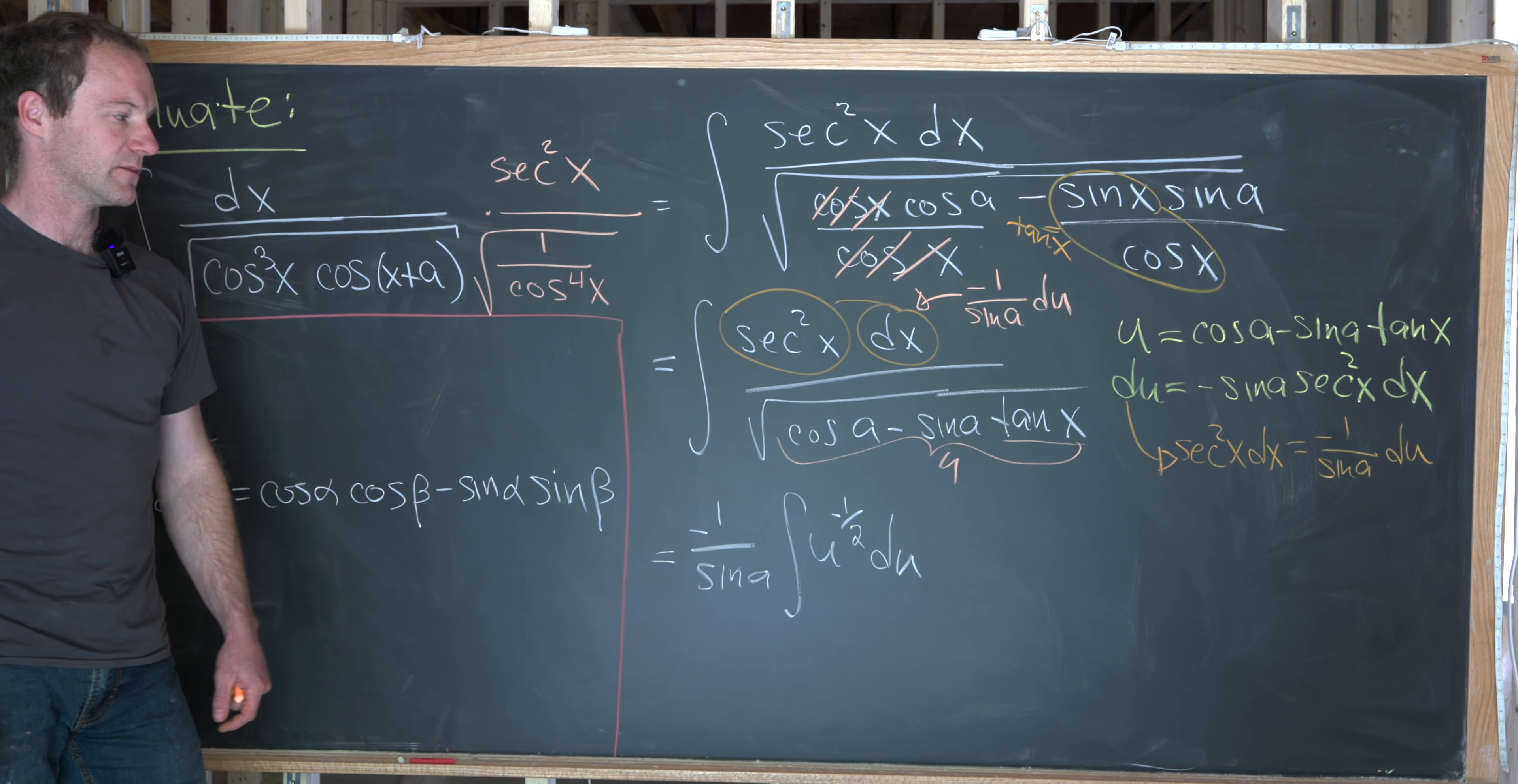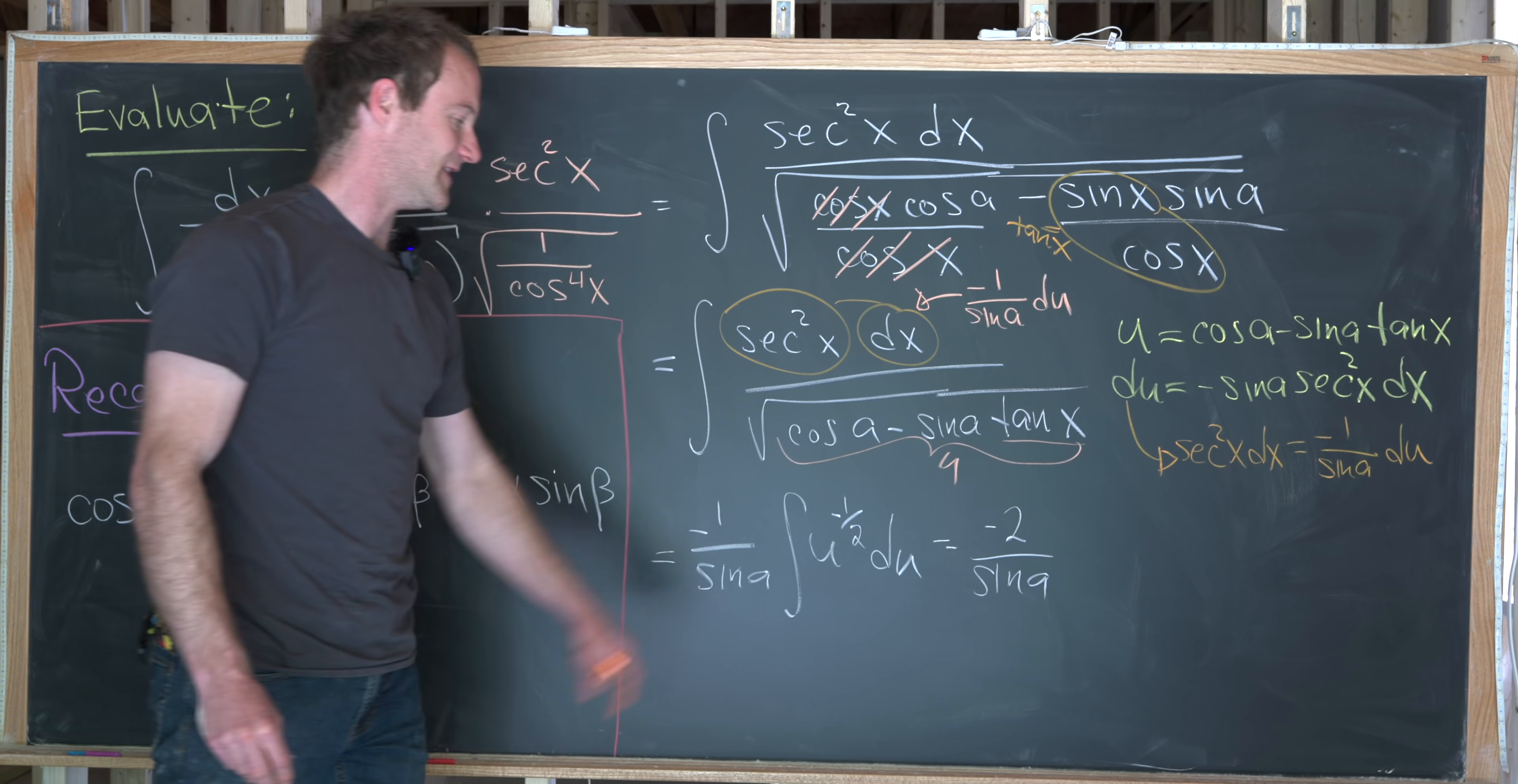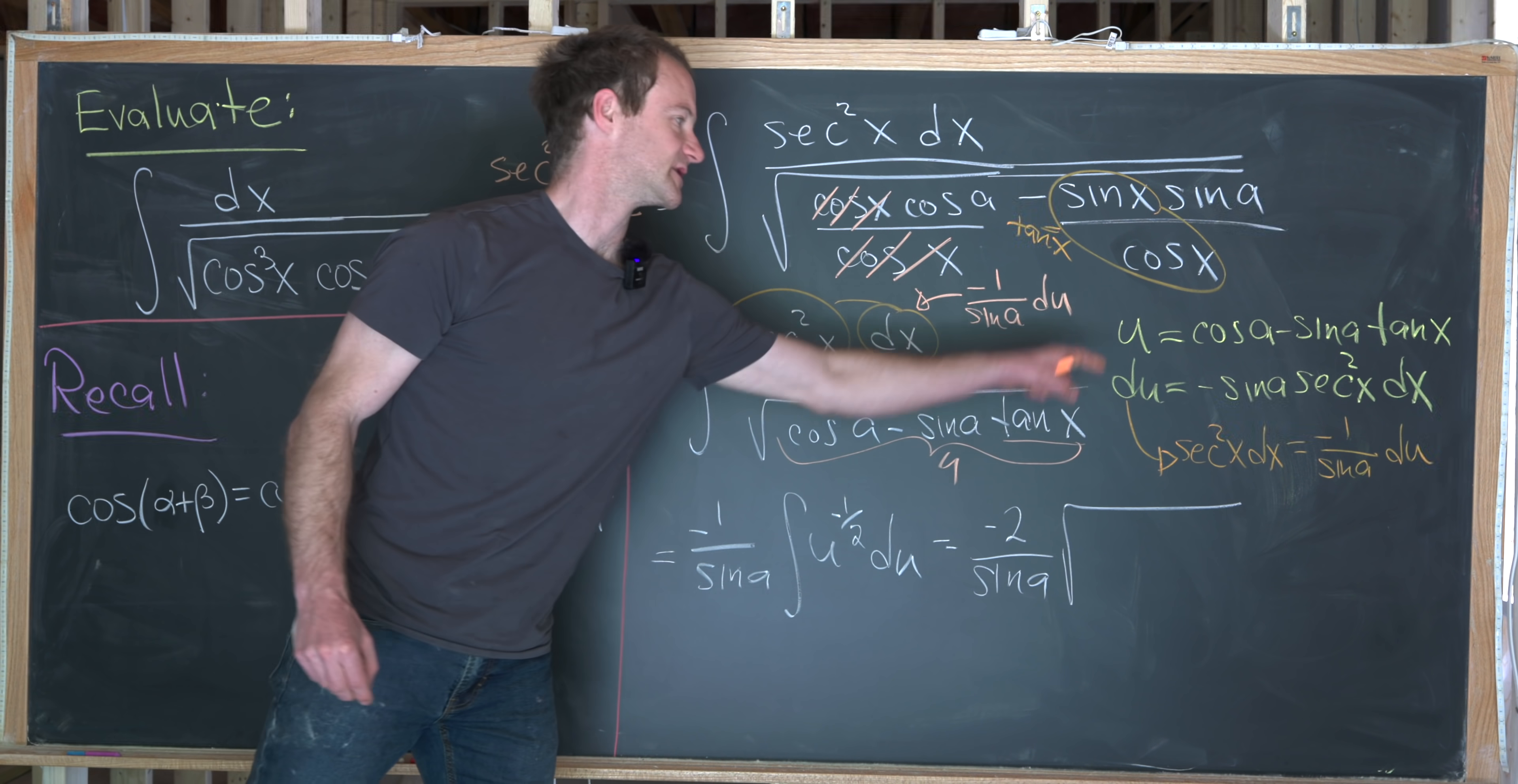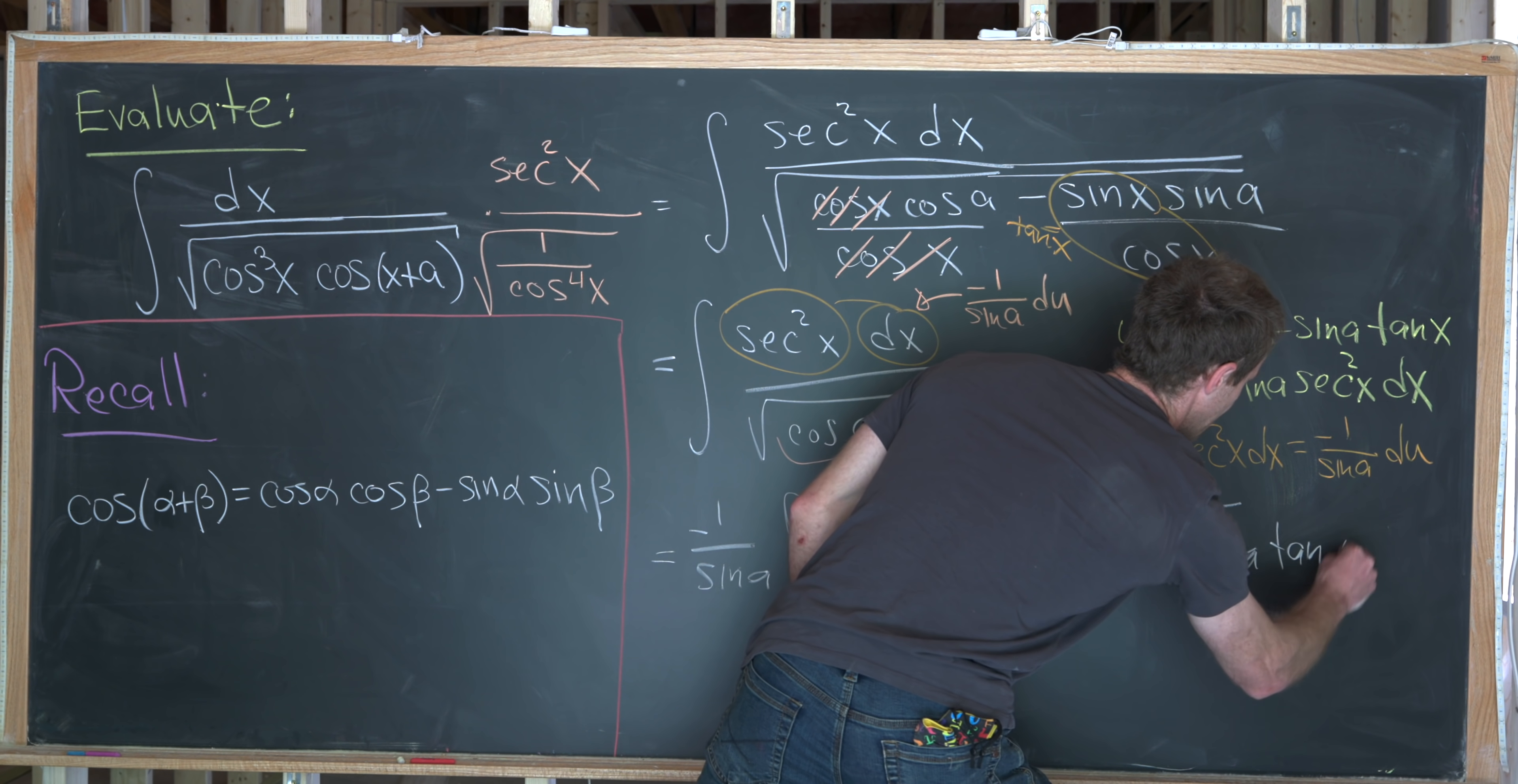Increasing the exponent by one will change minus a half to a half. Dividing by that new exponent is the same thing as multiplying by two. That's going to give us minus two over sine a and then u to the half. But that's the square root of u. I can just take that u and rewrite it with our substitution. So the square root of u is really the square root of this thing. I've got cosine of a minus sine of a tangent of x.